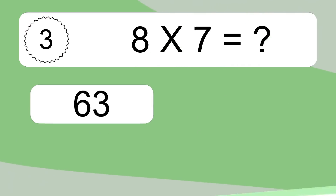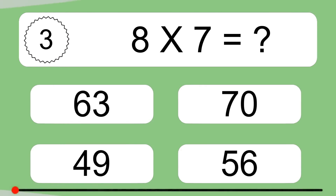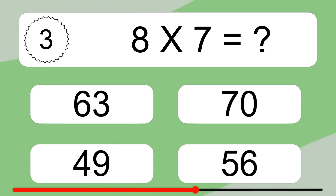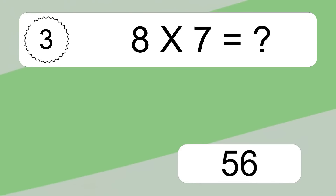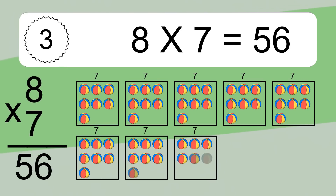8 times 7 equals what? 8 times 7 equals 56.